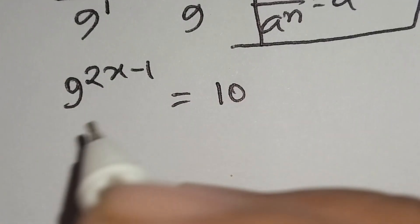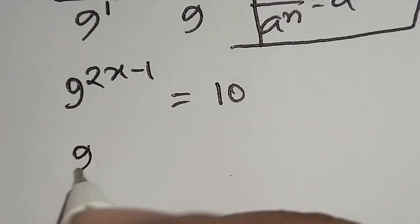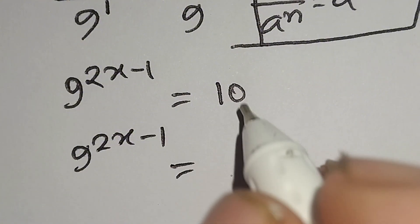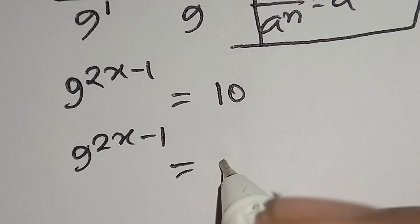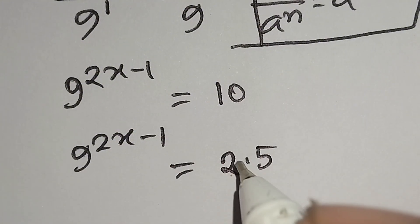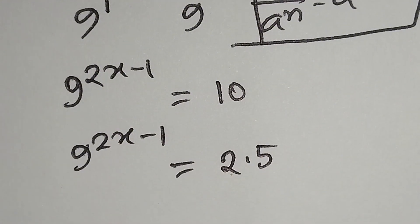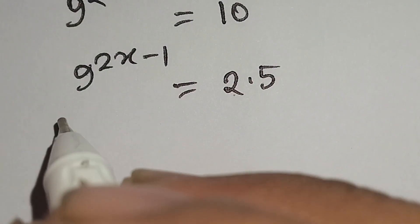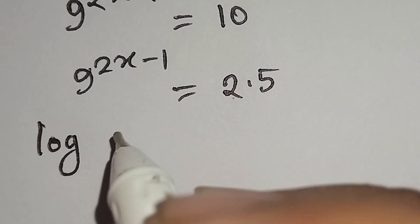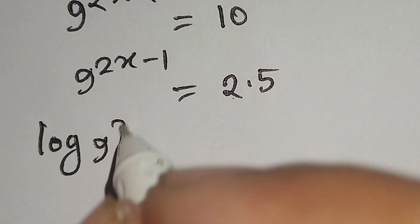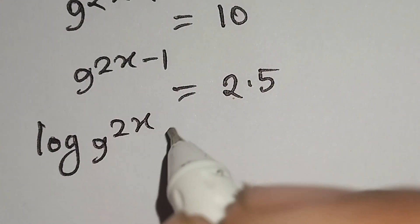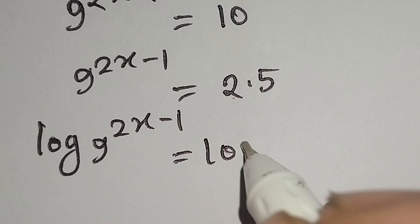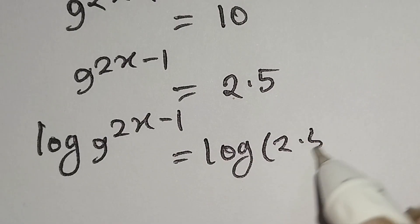So we have 9 to the power 2x minus 1 is equal to 10, which equals 2 times 5. Now we will take log on both sides, so we write log of 9 to the power 2x minus 1 is equal to log of 2 times 5.